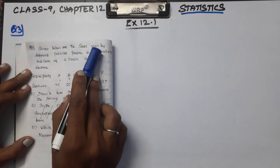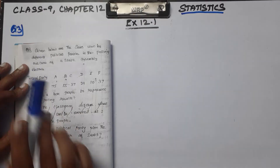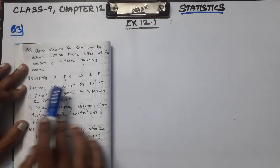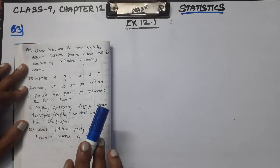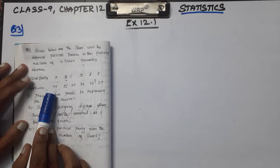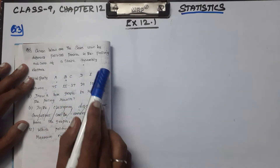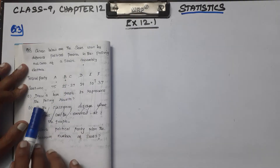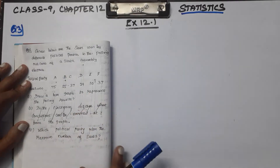Given below are the seats won by different political parties in the polling outcome of a state assembly election. Here are the parties A, B, C, D, E, F with their respective seats. Let's draw a bar graph to represent the polling results.